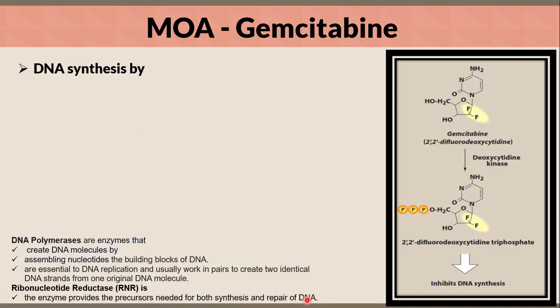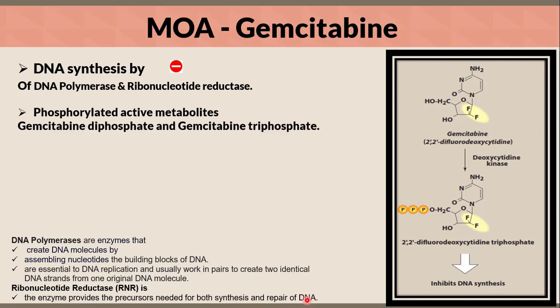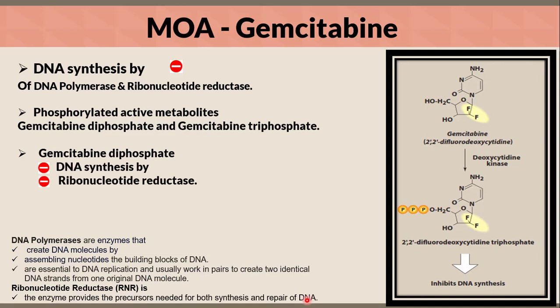For the mechanism of action of gemcitabine, it inhibits DNA synthesis by inhibition of DNA polymerase and ribonucleotide reductase. The phosphorylated active metabolites — gemcitabine diphosphate and gemcitabine triphosphate — are responsible. Gemcitabine diphosphate inhibits DNA synthesis by inhibiting ribonucleotide reductase, and gemcitabine triphosphate incorporates into DNA and inhibits DNA polymerase, resulting in inhibition of DNA synthesis.